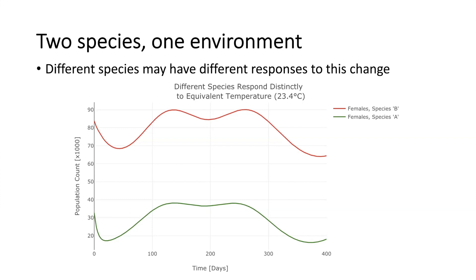Together, this allows each species A and B to react uniquely. In the image, we have species A in green and the new species B in red, featured in an environmental scenario where over the course of the year, the average temperature is 23.4 degrees Celsius.